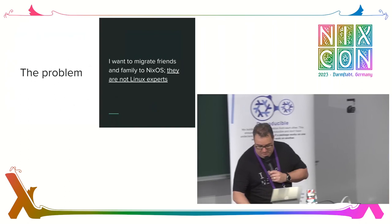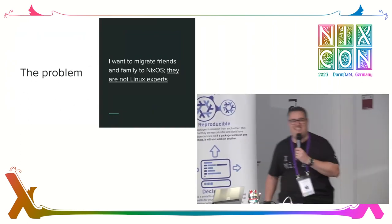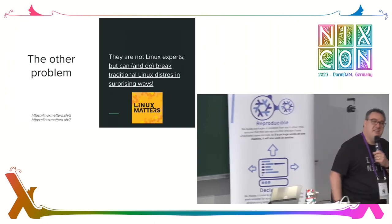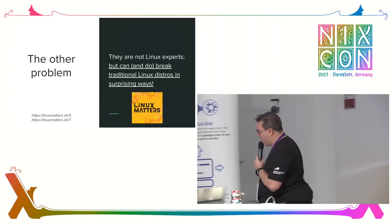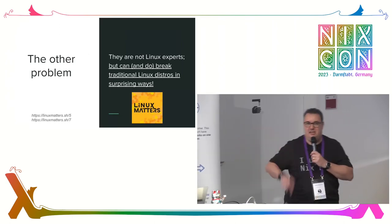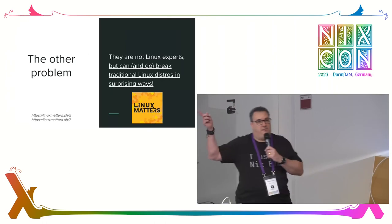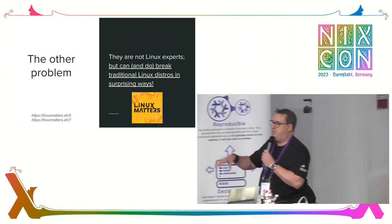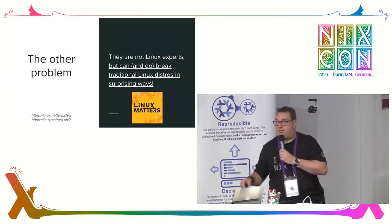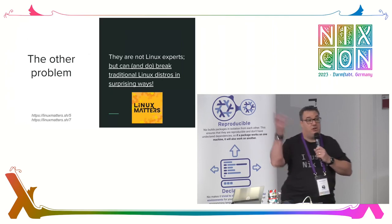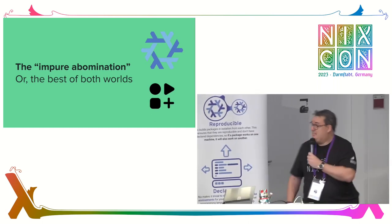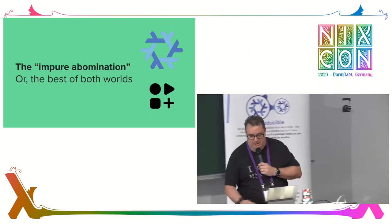So we roll on to the present day. Here is the problem: I want to migrate my friends and family to NixOS, and they are not Linux experts. They also found ingenious ways to break traditional desktops. I do a podcast with my friends called Linux Matters — you can find us at linuxmatters.sh. In episode five, a friend posited that immutable Linux was the right desktop for novice Linux users because it was an on-rails, safe environment — they couldn't screw it up. And in episode seven, I gave an introduction to what I'm presenting here today. I called it the impure abomination, but actually I think it's the best of both worlds, and I'll explain why.